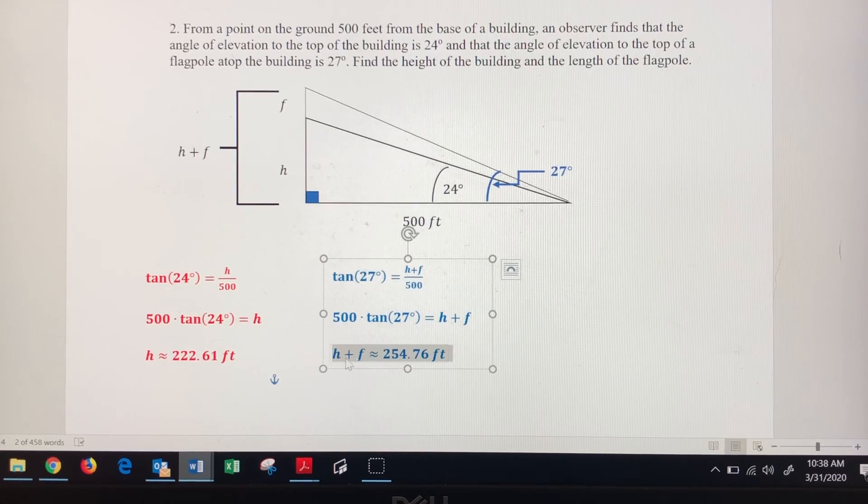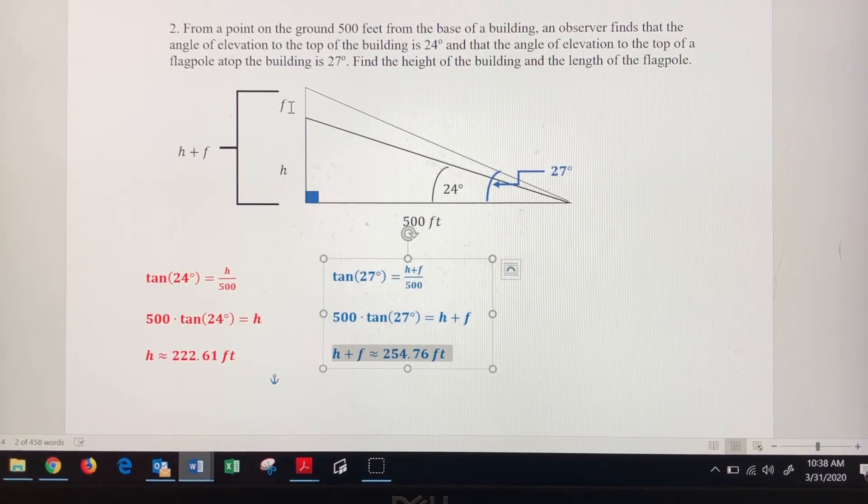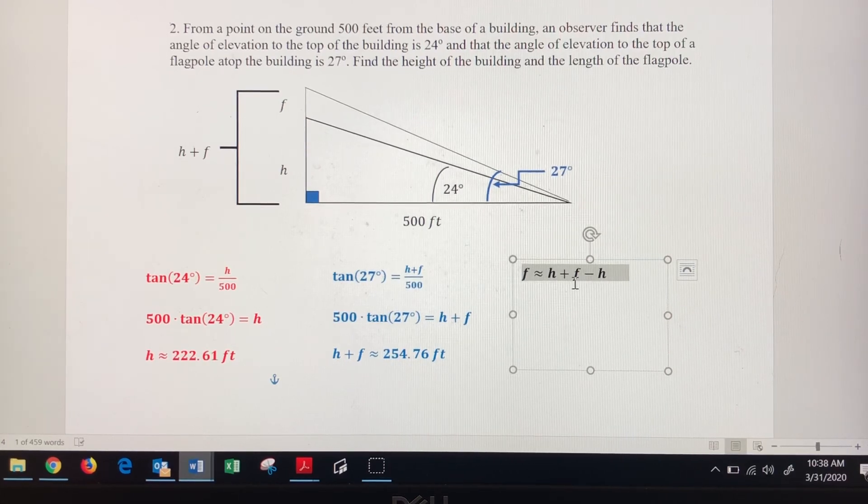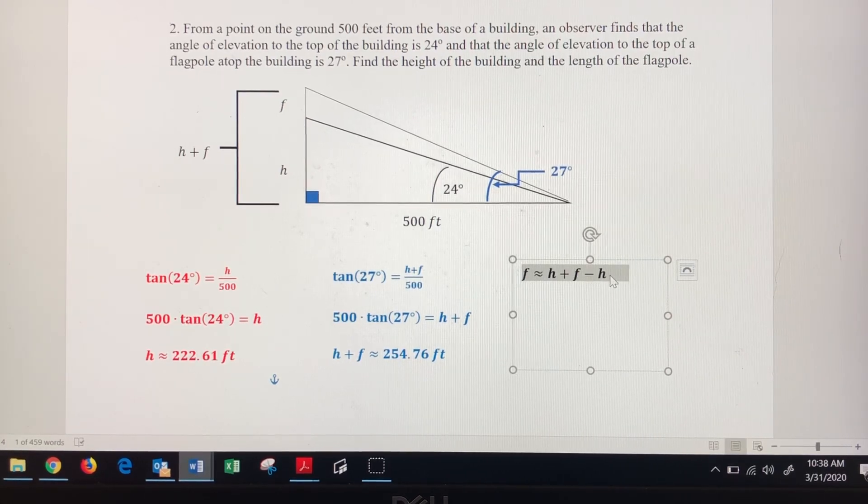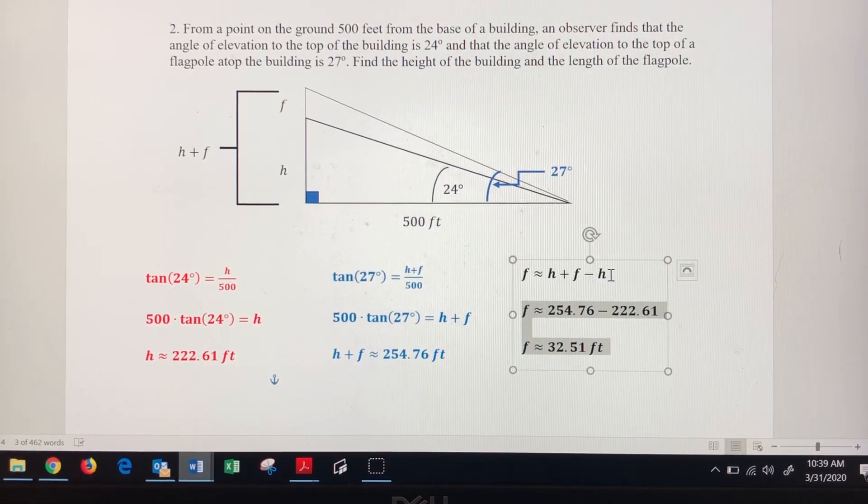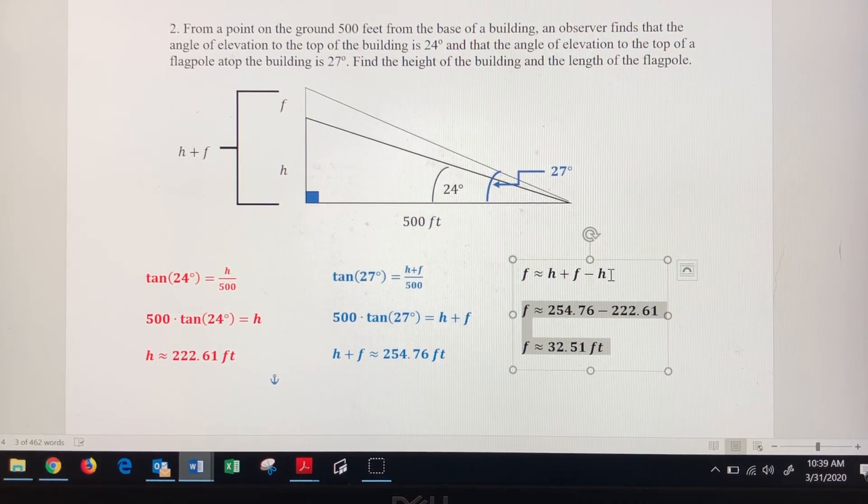Now I've got h plus f and I've got h. If I subtract those two, that's going to allow me to find the height of the flagpole. So the height of the flagpole is the h plus f, that's the entire height we just found, and we're going to take away the original height of the building that we found earlier. So we've got 254.76 minus 222.61, so the approximate height of the flagpole is 32.51 feet.